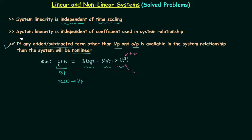According to property number 2, system linearity is independent of the coefficients used in the system relationship. The first coefficient is 1 multiplied to y, which is definitely not going to affect the linearity of the system. The second coefficient we have is sin(t), and it will also not affect the linearity of the system. So because of coefficients, there will be no effect on linearity — the system will be linear.